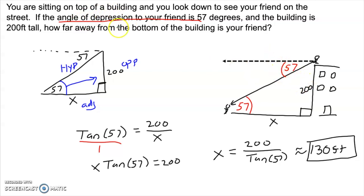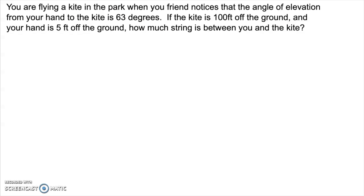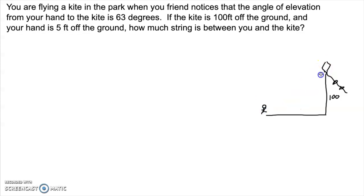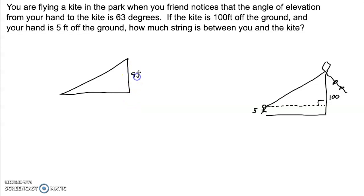Be careful about that. When you're doing an angle of depression, always draw that horizontal line. One more example with an extra little wrinkle: we're flying a kite in the park and a friend notices that the angle of elevation from your hand to the kite is 63 degrees. If the kite is 100 feet off the ground and your hand is 5 feet off the ground, how much string is between you and the kite? Since your hand is 5 feet above the ground, the triangle is actually 5 feet off the ground too. So I only need 95 feet for the vertical side of the triangle, because the other 5 feet is the part underneath — a little rectangle 5 feet tall by whatever width.